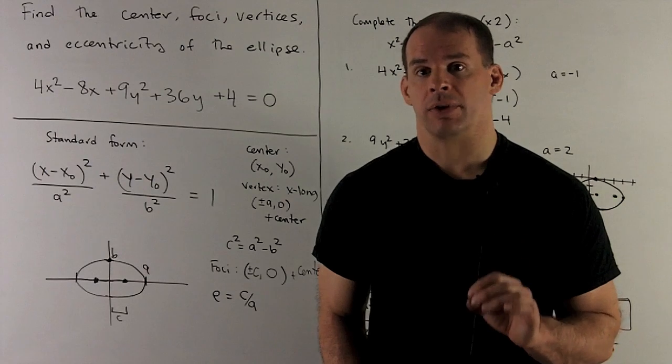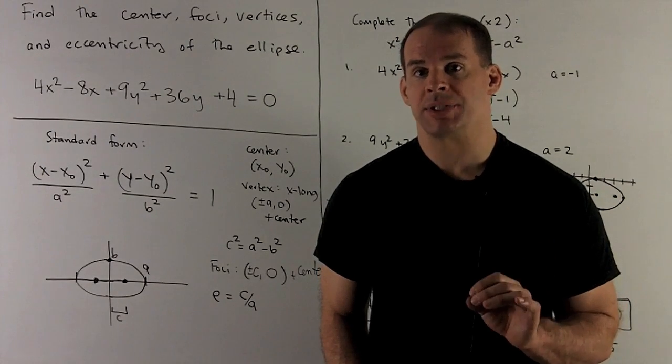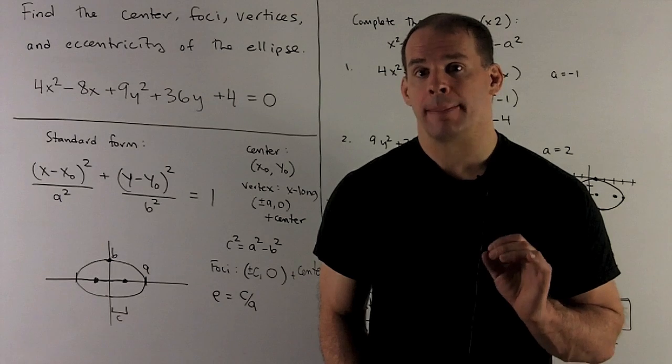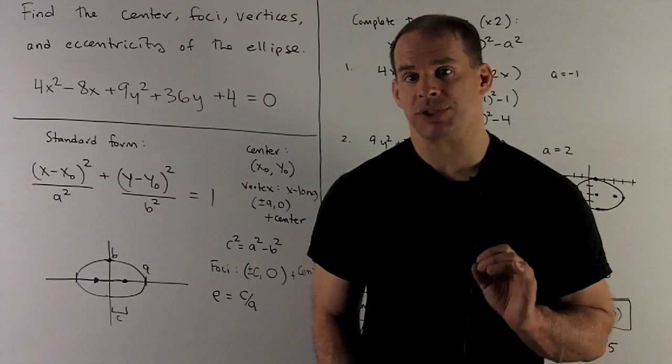Find the center, the vertices, the foci, and the eccentricity of the ellipse, 4x² - 8x + 9y² + 36y + 4 = 0.